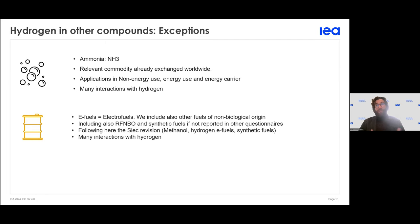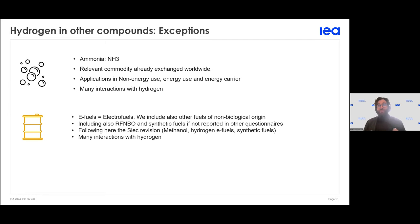The two special cases we mentioned are: first, ammonia. Ammonia is a traditional product and is the most stable and safe way to transport hydrogen. It is relatively stable. Second, in the questionnaire, we also discuss renewable synthetic fuels. These fuels are produced using technology that combines hydrogen and CO₂ to make them more suitable for use as fuel.